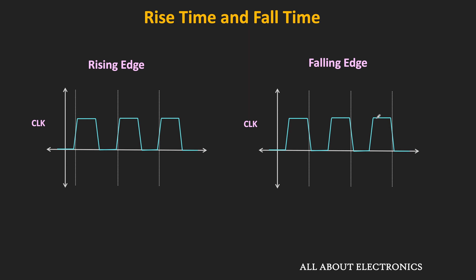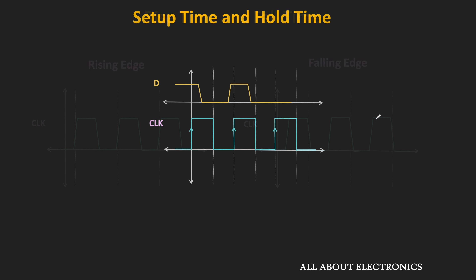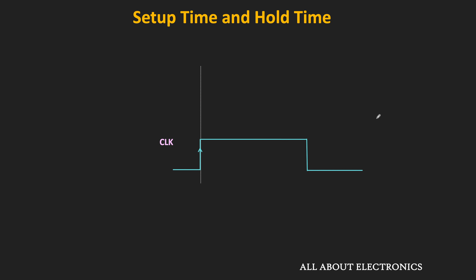Now let us talk about the setup time and the hold time of the flip-flop. So far we have assumed that at the clock edge, whatever input is present at the flip-flop will be sampled immediately. But actually, the input should remain stable for a certain time just before and after the clock edge. These timings are defined using the setup time and the hold time. The setup time is the time duration for which the input should remain stable before the arrival of the clock edge.